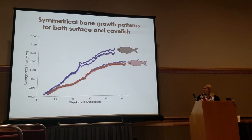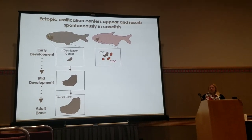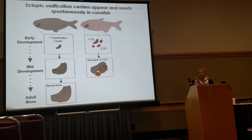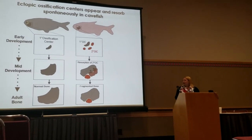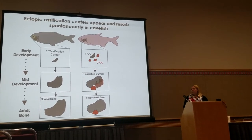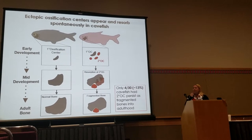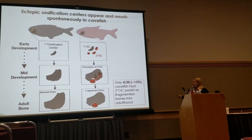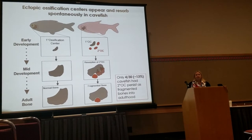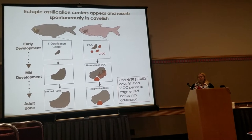Revising our hypothesis, we do see these secondary ossification centers popping up early in development — some resorbing during mid-development back into the larger bone, with fragmented bones resulting from any ossification centers that persist. However, out of 30 fish I looked at, only four had fragmented bones from this secondary ossification center mechanism. That is not what we would expect given that about 90–99% of our cave fish have fragmented bones in adults. So there's another piece to this story.